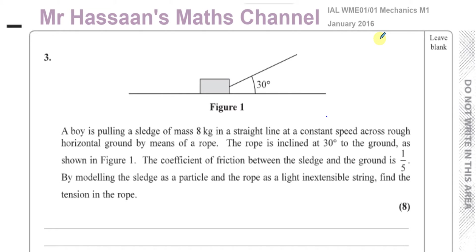A boy is pulling a sledge of mass 8 kilograms in a straight line at a constant speed across rough horizontal ground by means of a rope. The rope is inclined at 30 degrees to the ground as shown in figure 1. The coefficient of friction between the sledge and the ground is one-fifth. By modeling the sledge as a particle and the rope as a light inextensible string, find the tension in the rope.